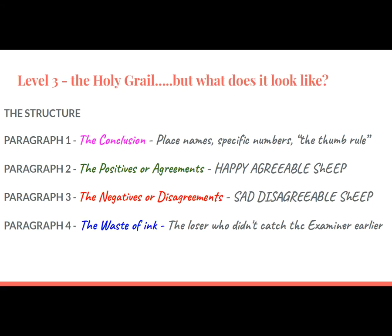So here is the four-paragraph essay. Paragraph one: your conclusion, place names, specific numbers — the thumb rule. If you can put your thumb on just the name of a city and there's no other detail anywhere else tied to that particular city, you won't fool your examiner. The number of times someone writes 'with reference to Mumbai' and then nothing about Mumbai's location, industries, or Dharavi. The positives of the argument come next — the happy sheep: positive social, positive economic, positive environmental, positive political. Then the negatives — the sad sheep. And then why write anything else? What a waste of ink.